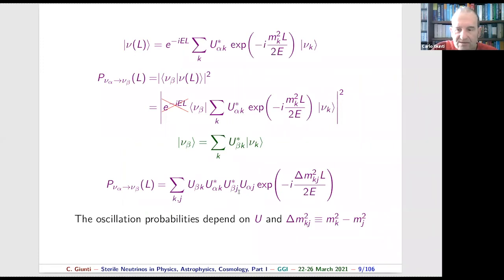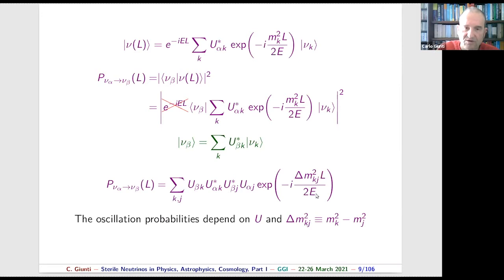The oscillation probability depends on the elements of the mixing matrix and on the delta-m squares. These are the quantities determined by nature that we want to measure in oscillation experiments. Different experiments will have different source-to-detector distances and different energy ranges for the neutrino energy.